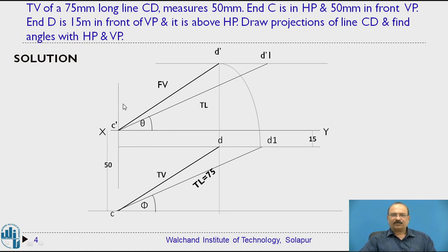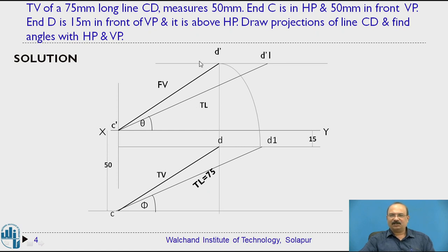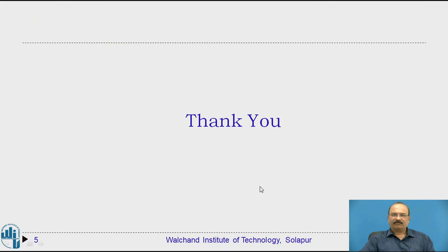After completing the drawing, recheck: write the theta angle value, the phi angle value, and verify that the true length measures 75 mm in both views as given in the problem. Thank you.